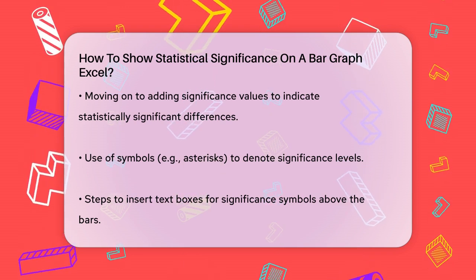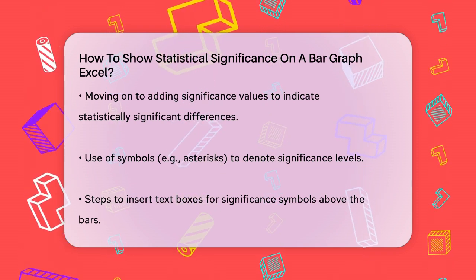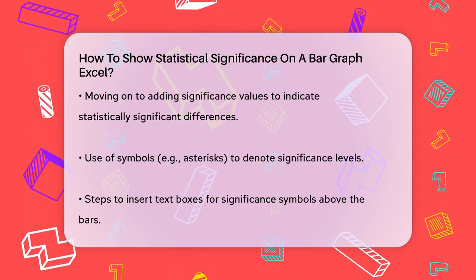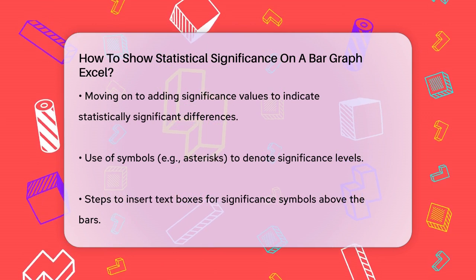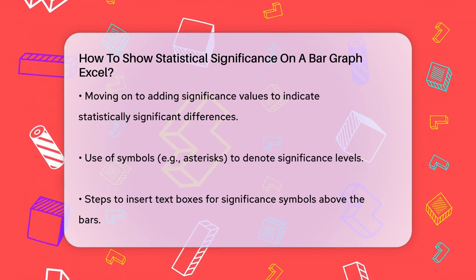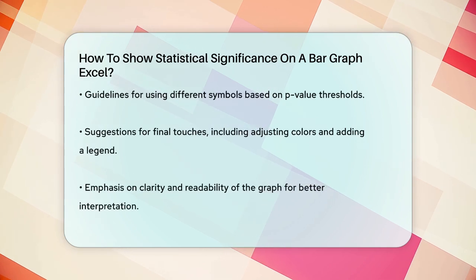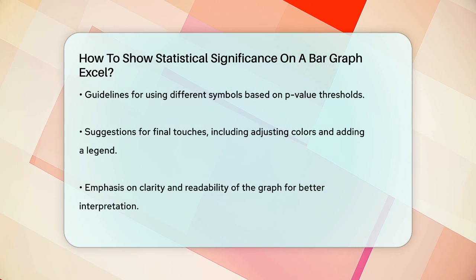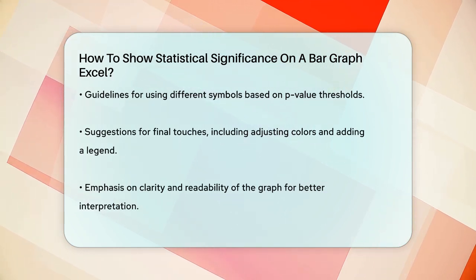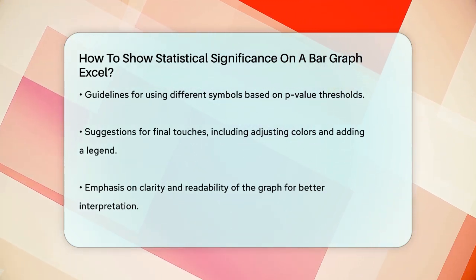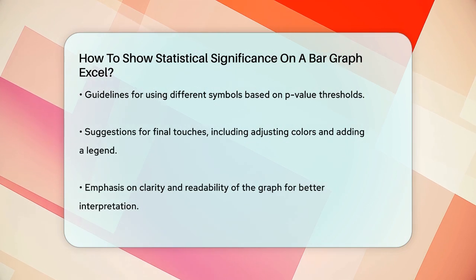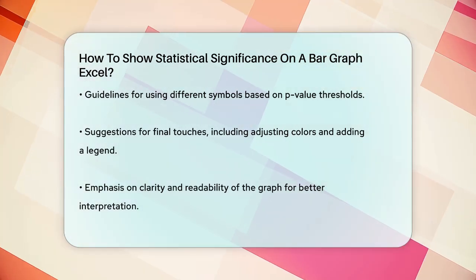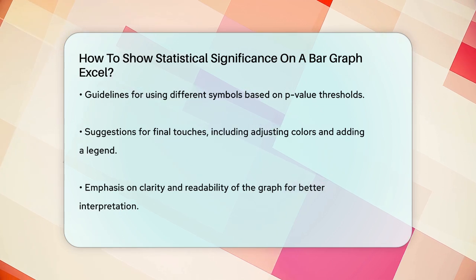Using Different Symbols for Different Significance Levels. You can use different symbols to represent different levels of significance. Here's a common approach: for p-values greater than 0.05, you might not use any symbol; for p-values less than 0.05, use a single asterisk (*); for p-values less than 0.01, use double asterisks (**); and for p-values less than 0.001, you might use triple asterisks (***). This way, viewers can quickly see which differences are statistically significant at different levels.